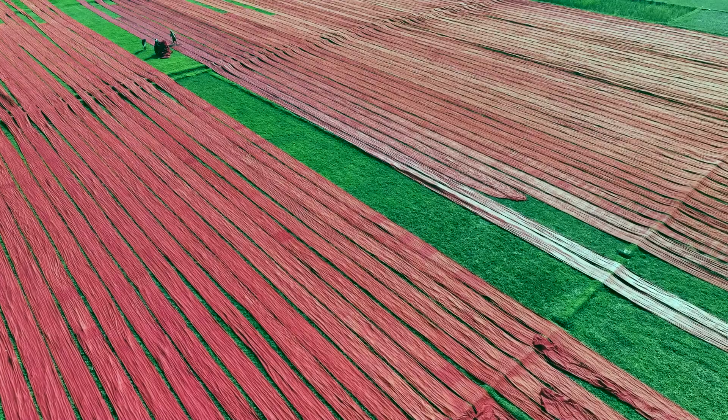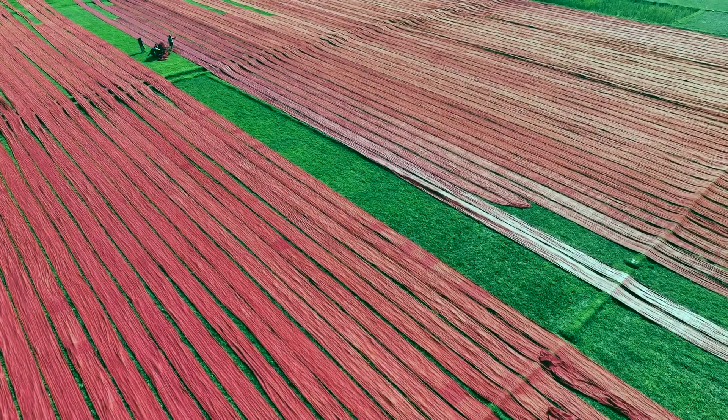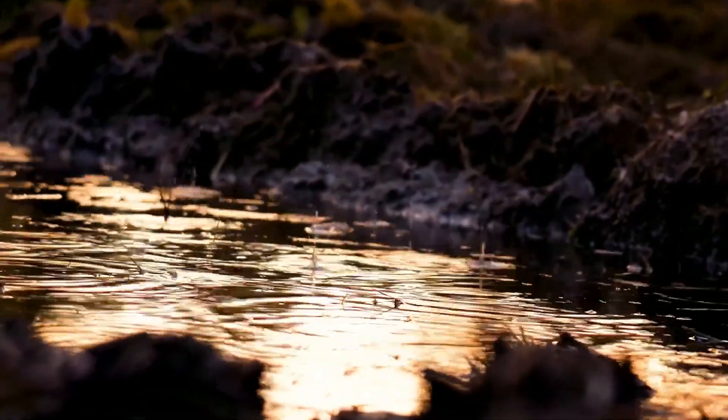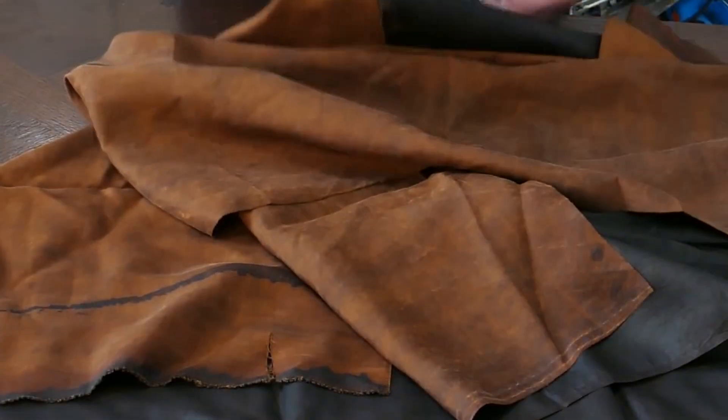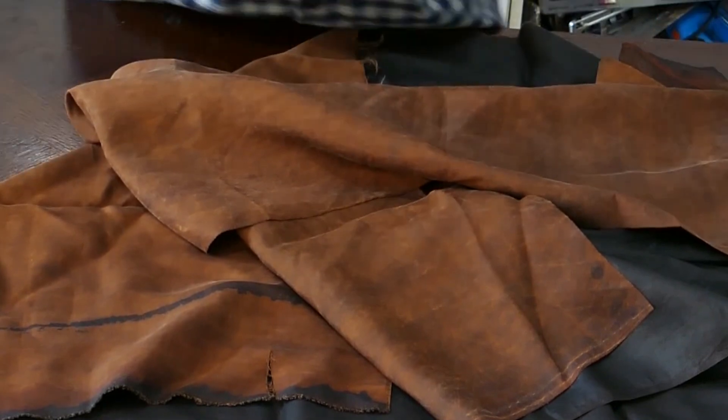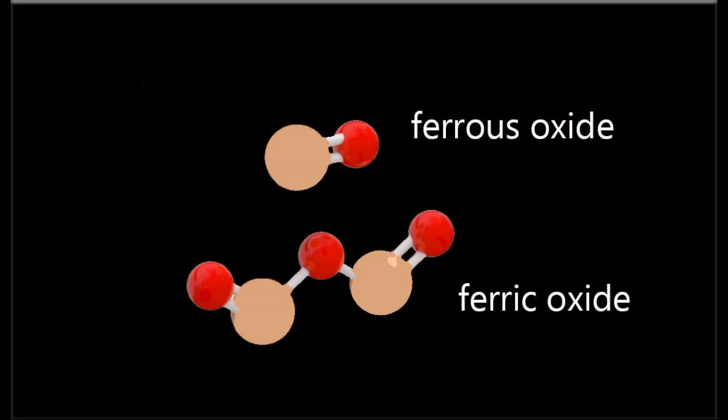Once the silk has absorbed as much tannin as possible, the artisans move to the next step: applying iron-rich mud. They take ferrous river mud, stretch the fabric under tension, and carefully brush the mud over the surface using a broom-like tool. The gelatinous properties of the Dioscorea plant prevent the mud from fully penetrating the fibers, meaning only one side of the silk gets coated in the iron-rich mud while the other side remains protected. As the fabric sits under the sun, the ferrous iron oxidizes into ferric iron, binding with the tannins already present in the fibers. This reaction gradually deepens the black tones on the treated side, while the other side retains its warm brown hues. The process is repeated layer by layer until the contrast between the two sides becomes beautifully distinct.